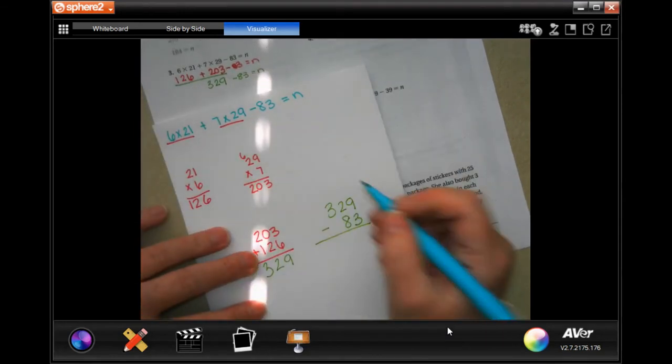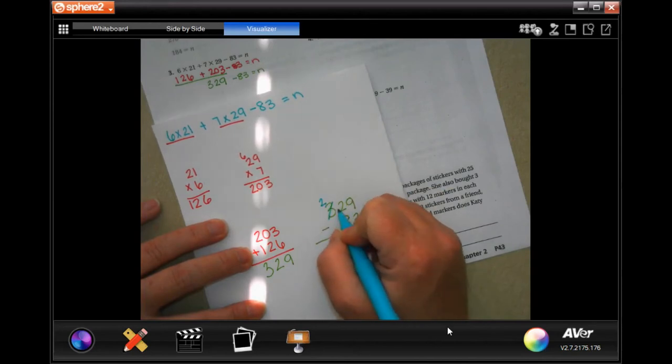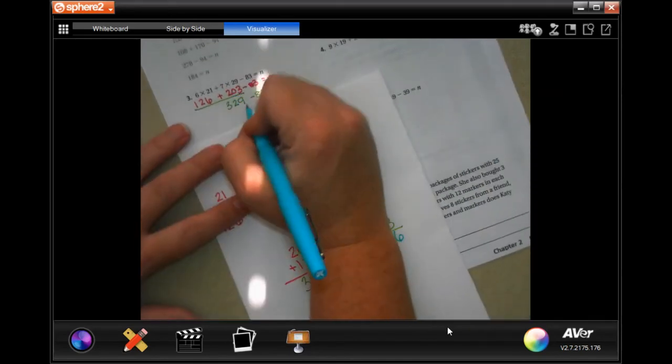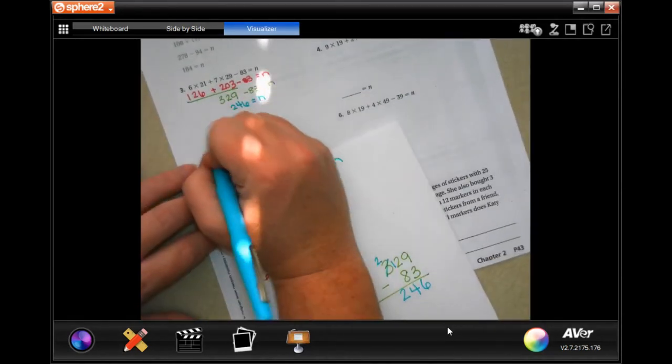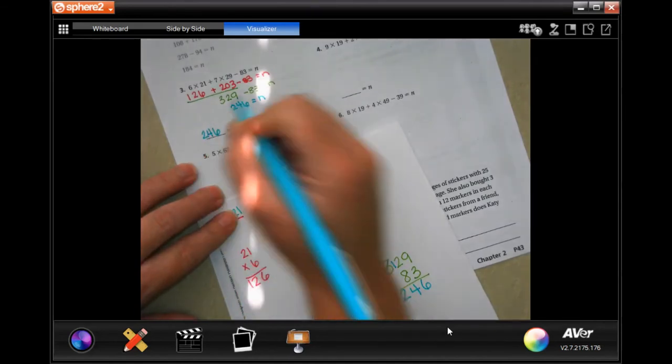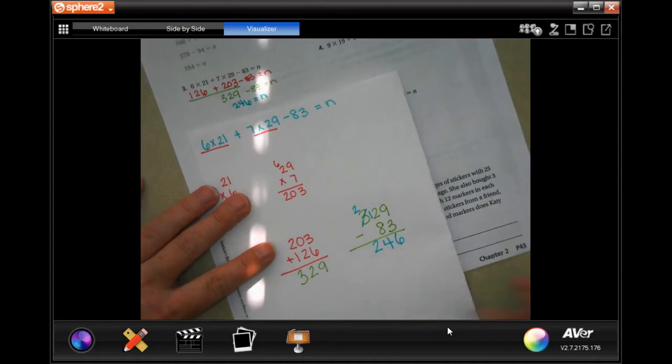Now I'm going to come over here and I'm going to do 329 minus 83. 9 minus 3 is 6, 2 cannot take away 8, I need to borrow 1, making it 12. So 2, 4, 6, 6, done. You just got to go step by step.